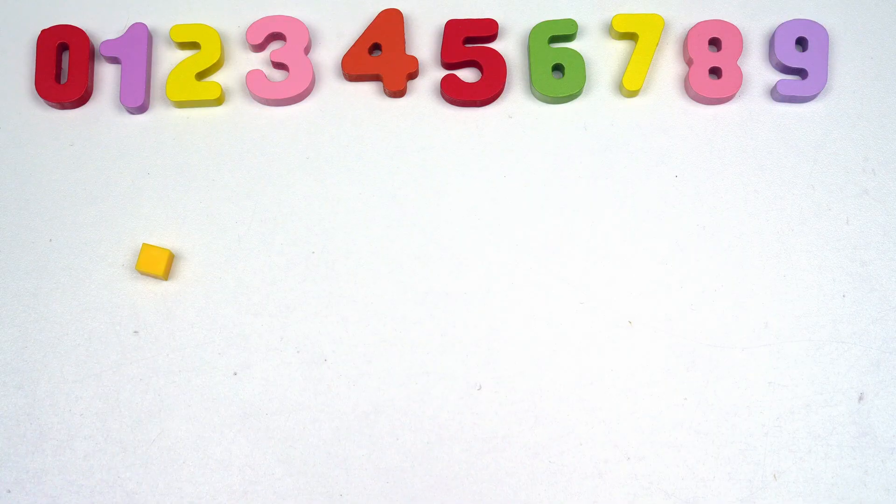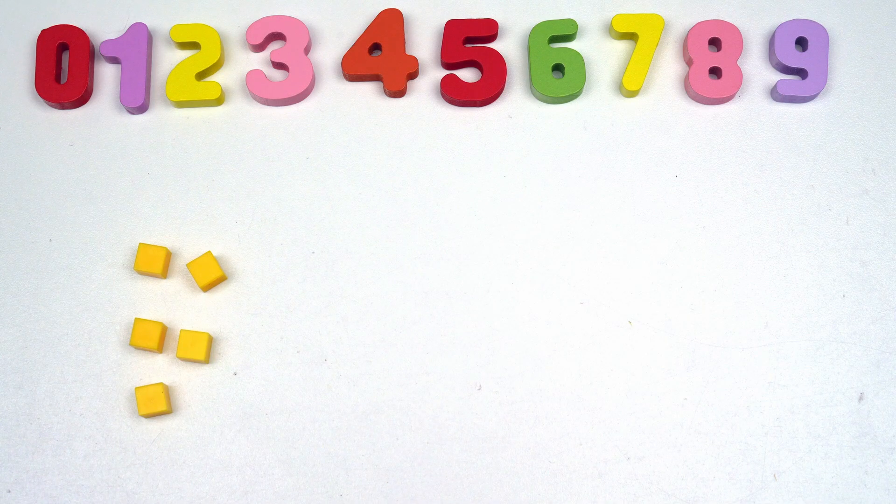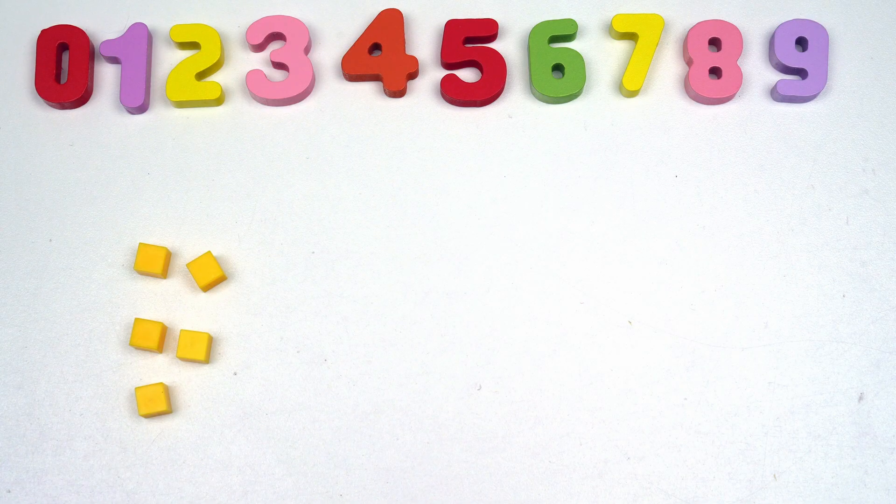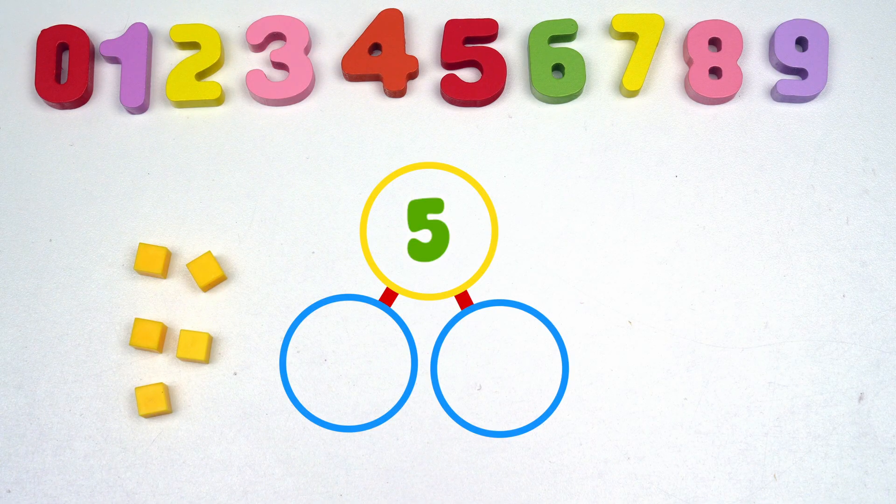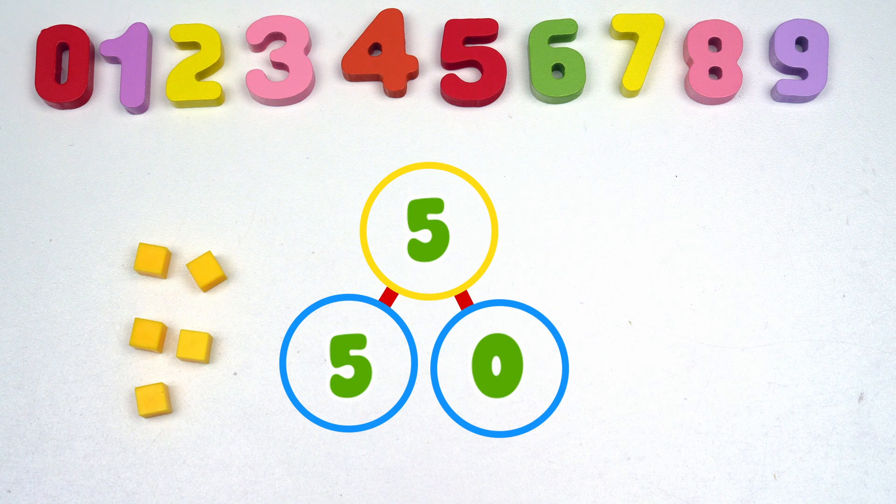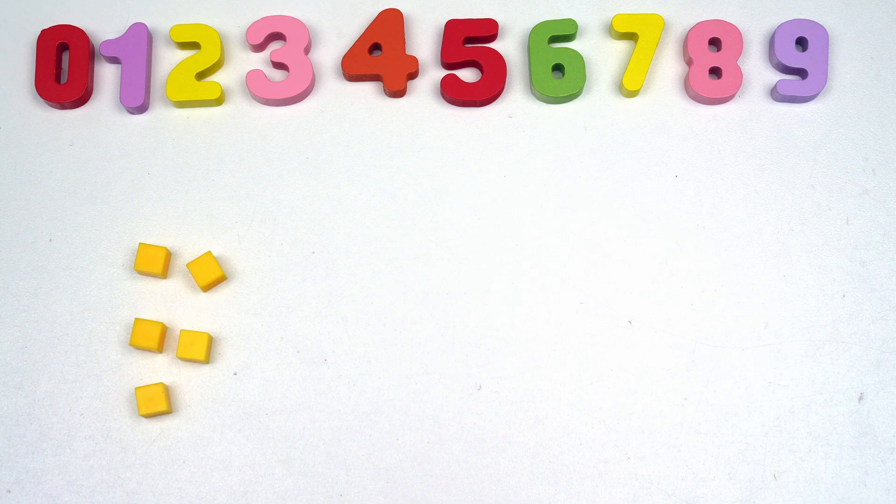One, two, three, four, five. So here we have five blocks, which is our whole number. We could have five and zero. And that still equals the number five. So that would be one number bond for five.